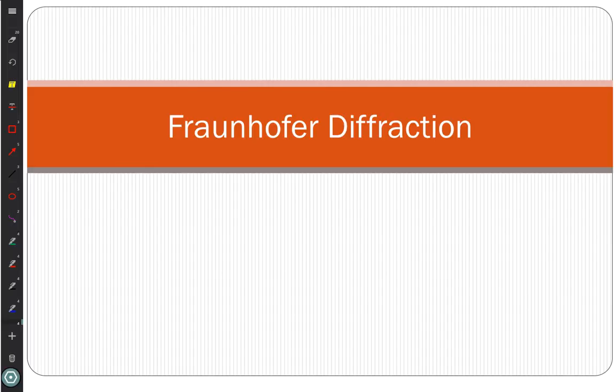What we're going to study today is called Fraunhofer diffraction. Fraunhofer is a person. Fresnel was another person. Fresnel worked out the problem for diffraction when you're close to the slit. Fraunhofer worked out diffraction when you're far from the slit. The Fraunhofer diffraction is the easy one, and that's what we're doing.